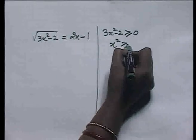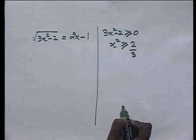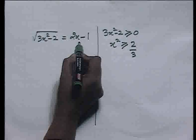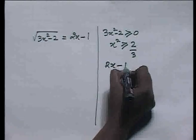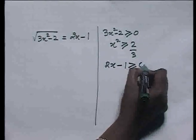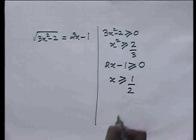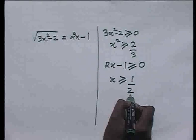That is, x² should be greater than or equal to 2/3. Also, since the left hand side of this equation is non-negative, therefore the right hand side will also be non-negative. That means 2x - 1 should be greater than or equal to 0, or x ≥ 1/2. So we have to find solutions that satisfy the conditions x² ≥ 2/3 and x ≥ 1/2.